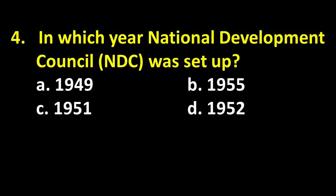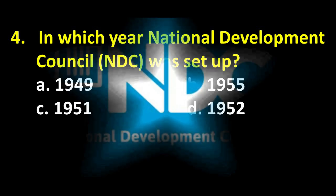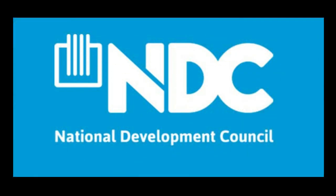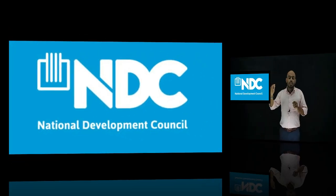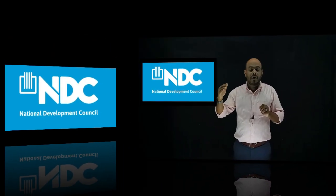Fourth question: in which year was the National Development Council (NDC) set up? Option A: 1949, option B: 1955, option C: 1951, option D: 1952. The National Development Council is related to planning and five-year plans in India. The right answer is option D, 1952.